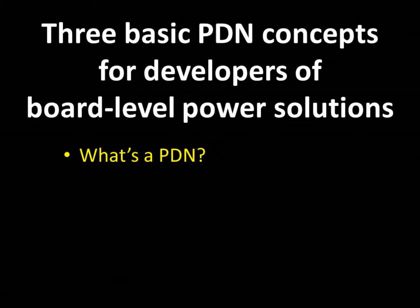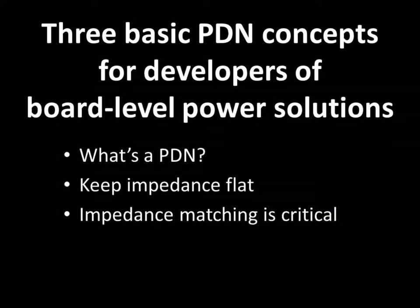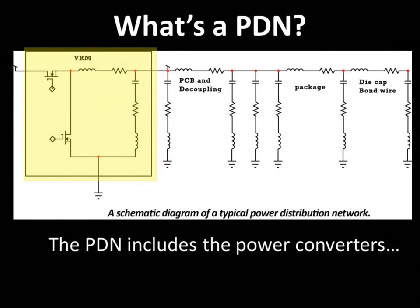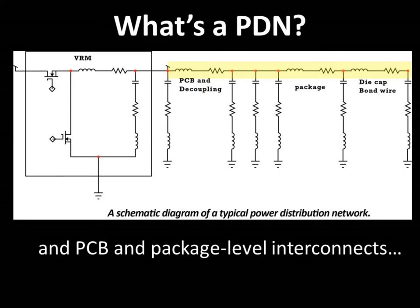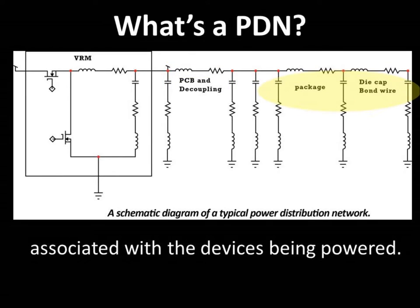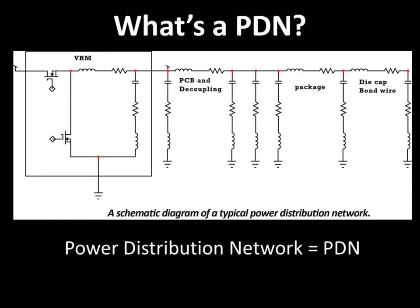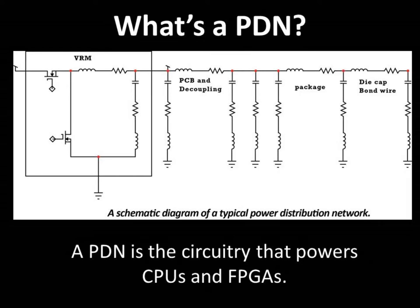What's a PDN? Keeping impedance flat and impedance matching is critical. Here in part one of this three-part video series, I'll discuss the first concept. A PDN consists of the power converters — which typically include POLs, VRMs, or linear regulators — decoupling capacitors, and all of the board level and package level interconnects that connect the power converters to the devices being powered.